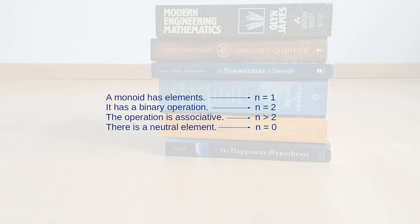Now that you've seen a concrete example, you should notice that every single piece of this definition plays a unique and crucial role. The binary operation allows you to combine two elements into a new one. The fact that it's associative allows you to combine three, four, and more elements. The elements of the monoid themselves give us the result of combining a single element. And the neutral element takes care of the case where we want to operate on zero inputs. So the key thing a monoid does is extend a binary operation from two inputs to any number of inputs, including zero and one, and this all happens in a very natural way.